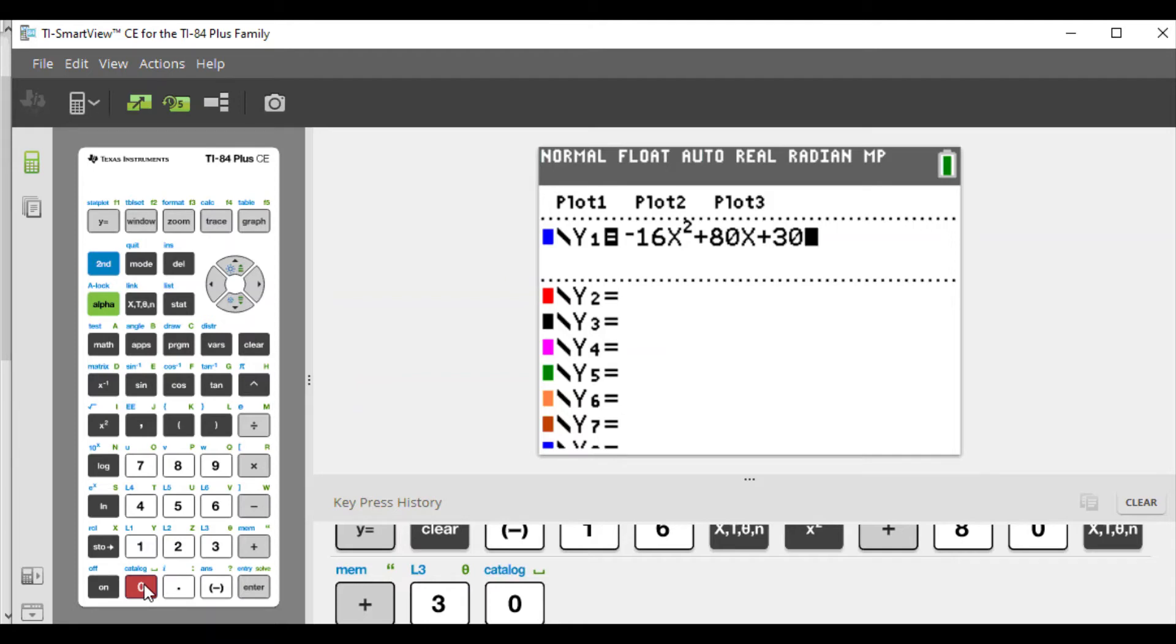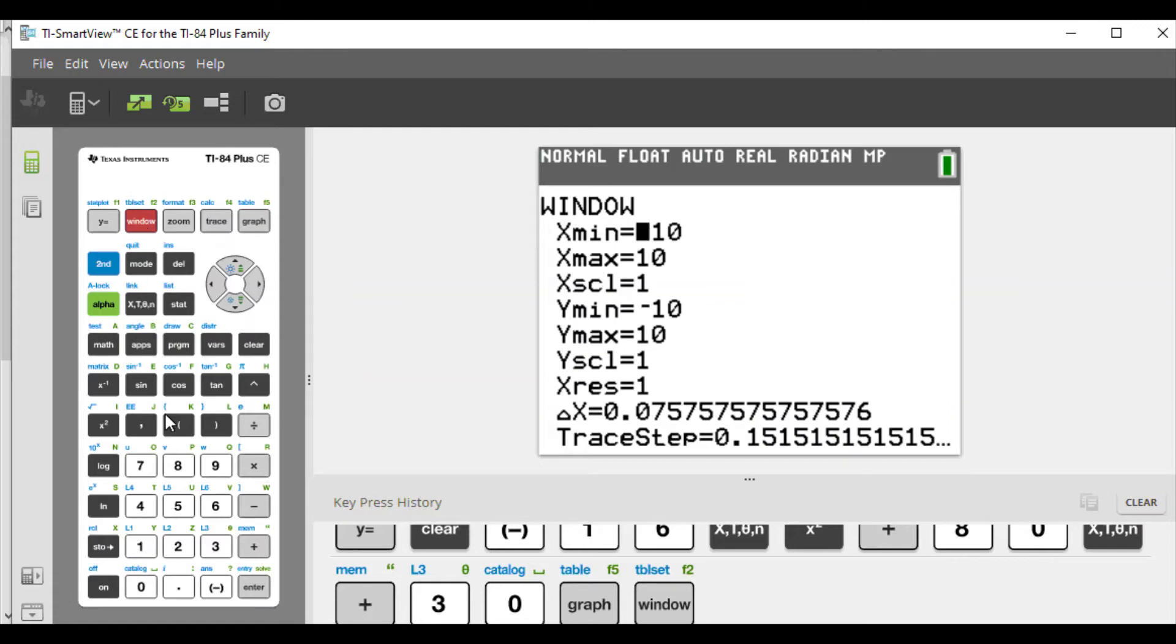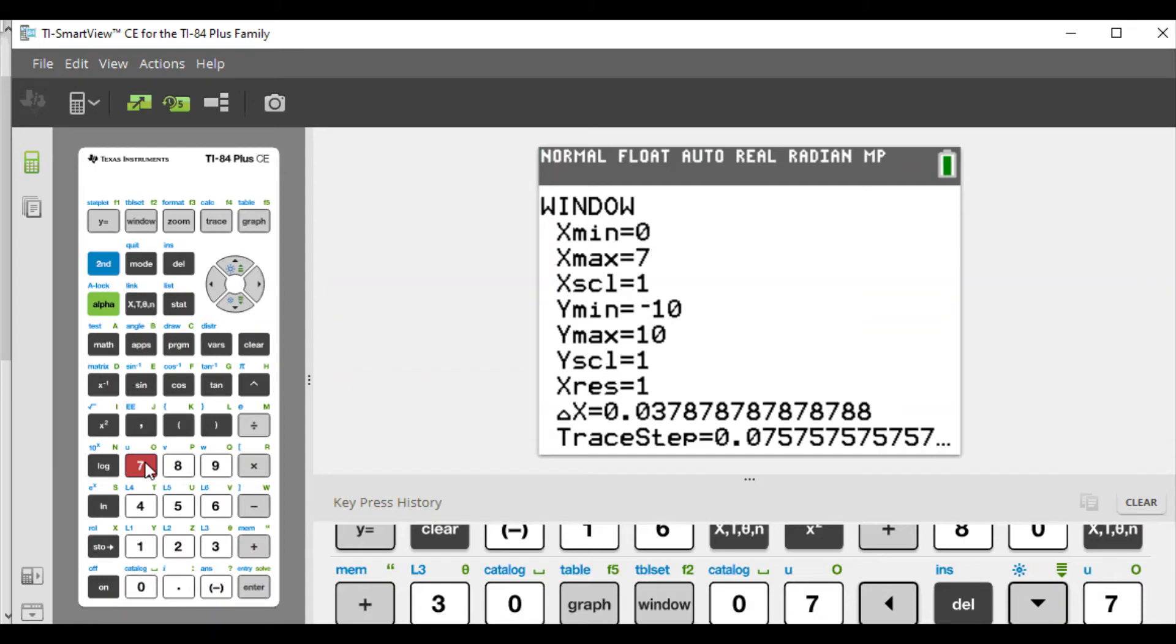If we graph this right now, you can't really see much. Instead we're going to change our window because our window will be starting from zero because we're not going to go back in time, and we'll set for maybe seven. Our x minimum is zero and our x max will be seven. We'll hit zoom and we're going to zoom fit, basically fitting the graph into the picture here.